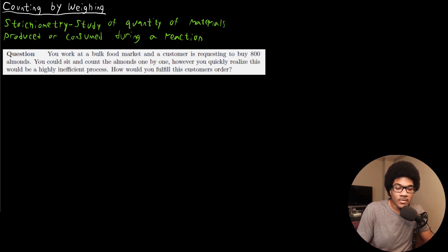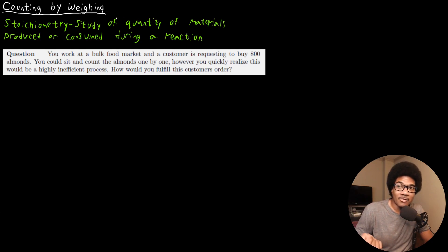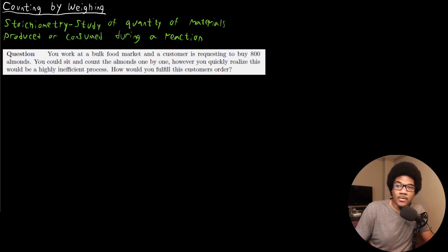Before we start studying stoichiometry in any explicit way, we have to really understand the concept of atomic masses. And before that, it's really centered around this idea of being able to count things by weighing them. In order to give us a good working understanding of this concept, I want to do it using an example.